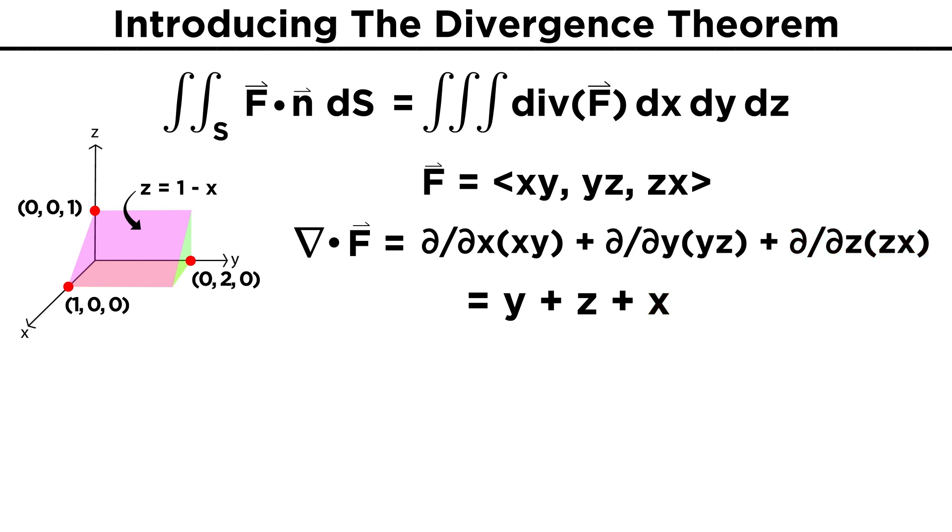Now we have the divergence, but before integration we must get our bounds sorted out. We get these from the region of our prism. One simple way to express these bounds is integrating Z first, letting it run from zero to one minus x. Now we don't have any more complicated bounds, so we can integrate y from zero to two, and x from zero to one. So our integral ends up being the integral from zero to one, the integral from zero to two, the integral from zero to one minus x, of y plus z plus x, dz dy dx.